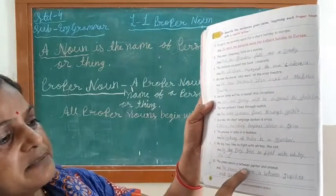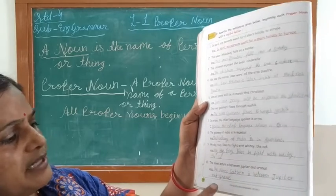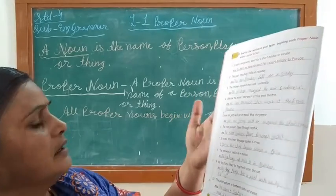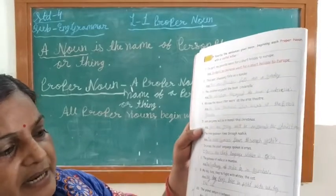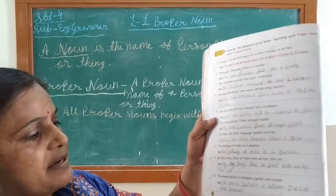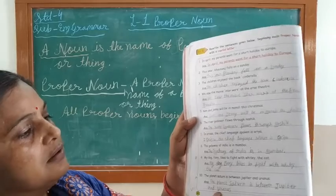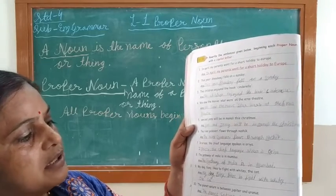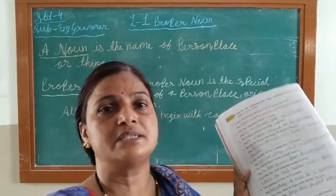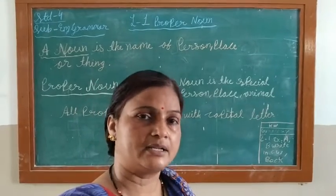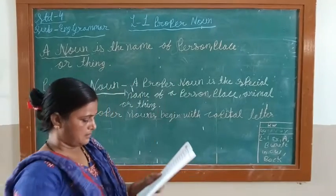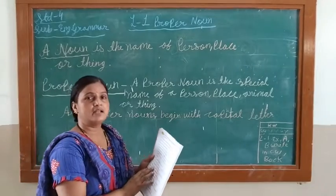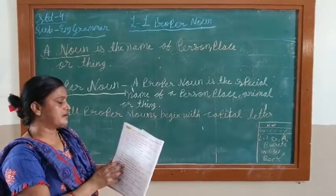The planet Saturn is between Jupiter and Uranus. Saturn — S capital; Jupiter — J capital; Uranus — U capital. These are your proper nouns. A proper noun always begins with a capital letter.